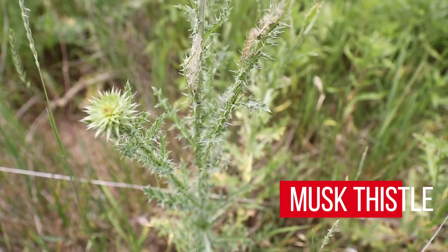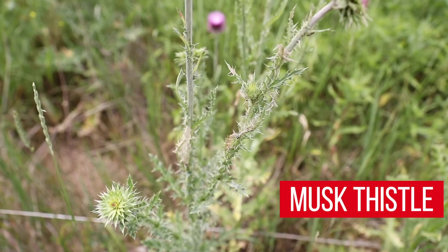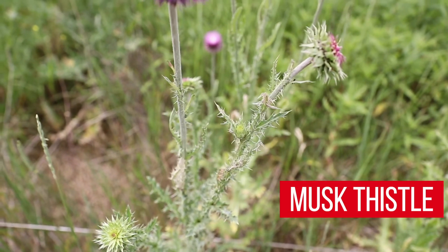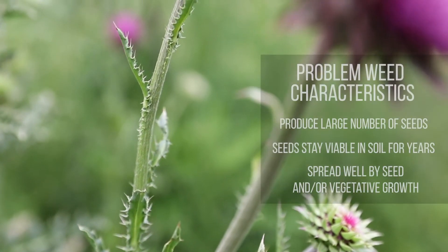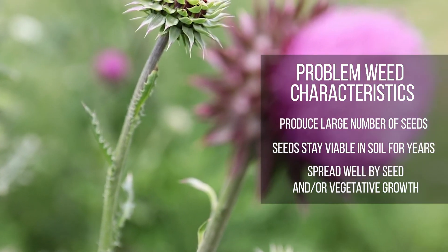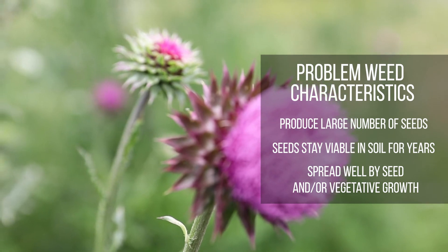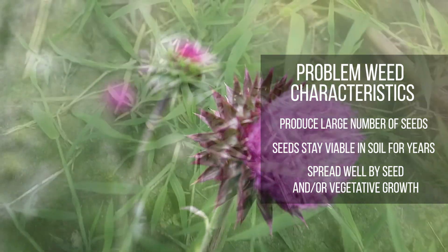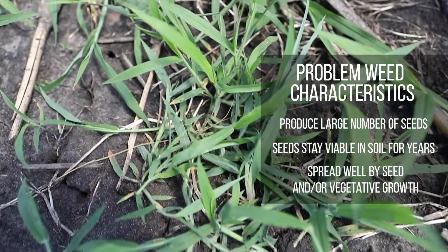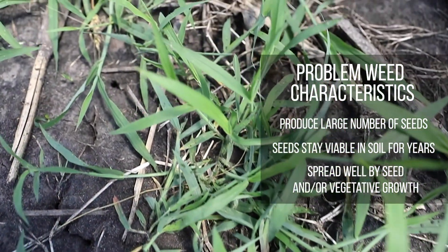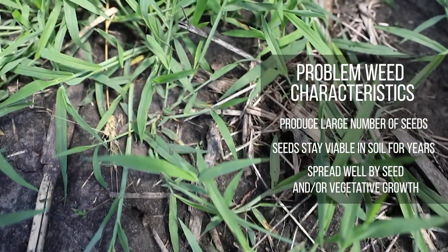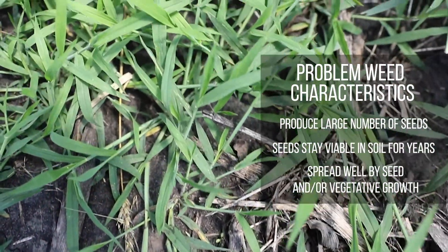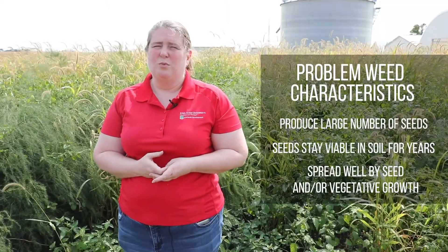Common weeds such as thistle and crabgrass have certain characteristics that really allow them to take over and spread. They produce lots of seeds, those seeds are able to stay dormant in the soil for a long period of time, and they're able to spread well through wind dispersal and other mechanisms.